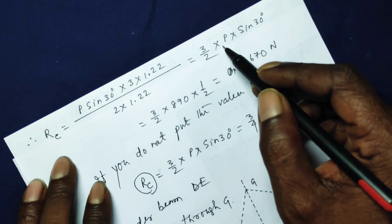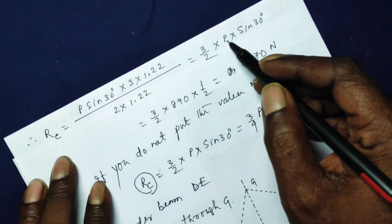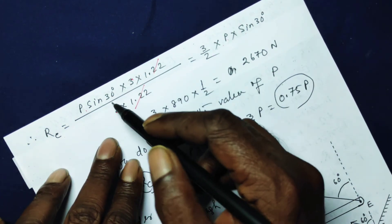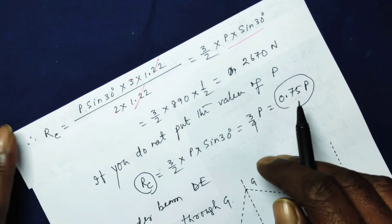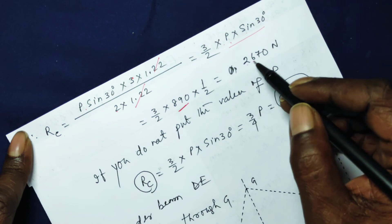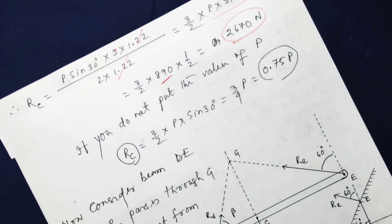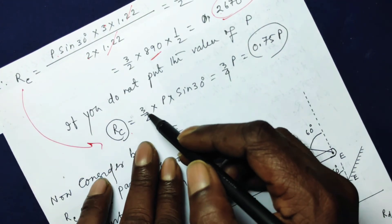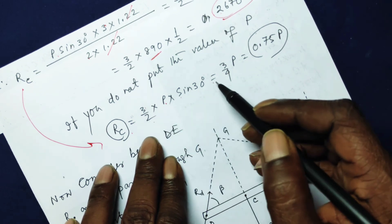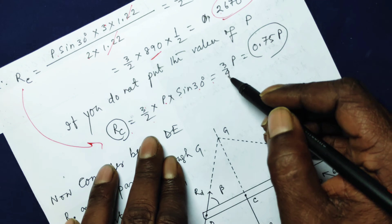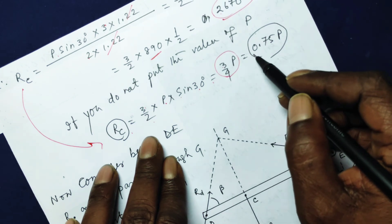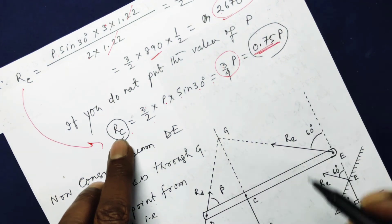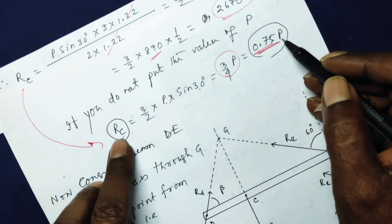Simplifying further: sin 30 is 1/2, and the 1.22 terms cancel. So RC equals (3/2) times P times (1/2), which equals (3/4) P, or 0.75 times P. Substituting P = 890 Newton gives RC equal to 2670 Newton. Therefore, the reaction force at C is equal to 75% of the applied force P, or 0.75P.